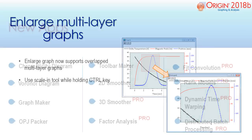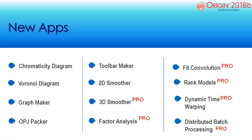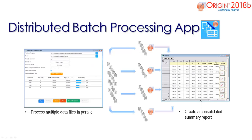We have a variety of new apps that will be made available in Origin 2018B. These apps can be individually downloaded and installed on the Origin workspace to provide customized features. One of the new apps is the Distributed Batch Processing app, which allows you to process multiple data files in parallel. The files are distributed to multiple background instances of Origin over available microprocessor cores on your PC. When all files are done processing, you can create a consolidated summary report.